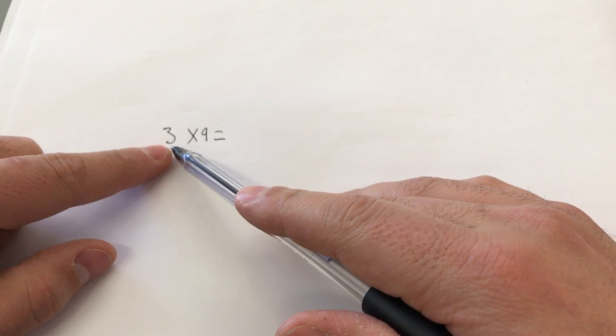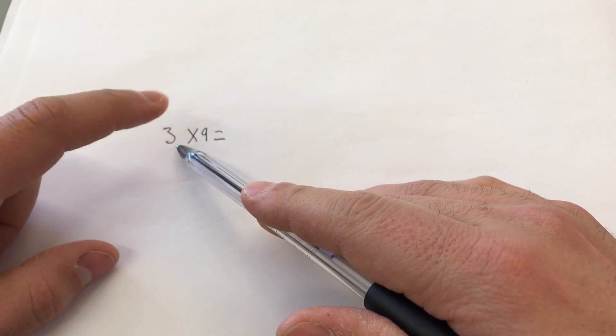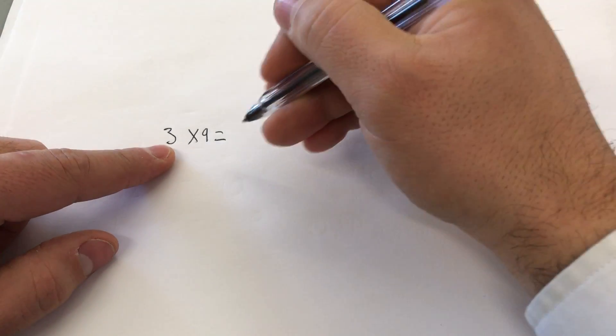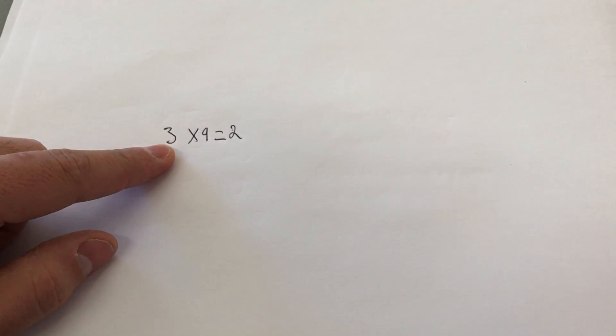So you're multiplying by 9. You want to take the number that's not 9 and subtract 1 from that number. So 3 subtract 1 is 2, and that's your first digit.